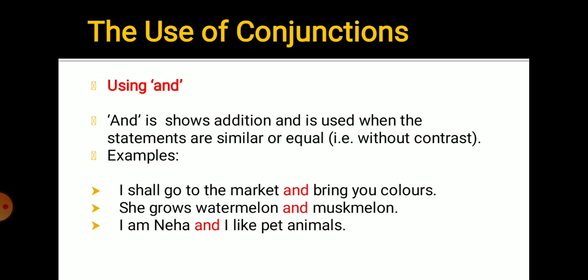Now we will learn the use of conjunctions. There are so many conjunctions like and, or, if, although, though. You should know where to use what. First one is and. And shows addition. And is used when the statements are similar or equal. We use and when two sentences are similar.